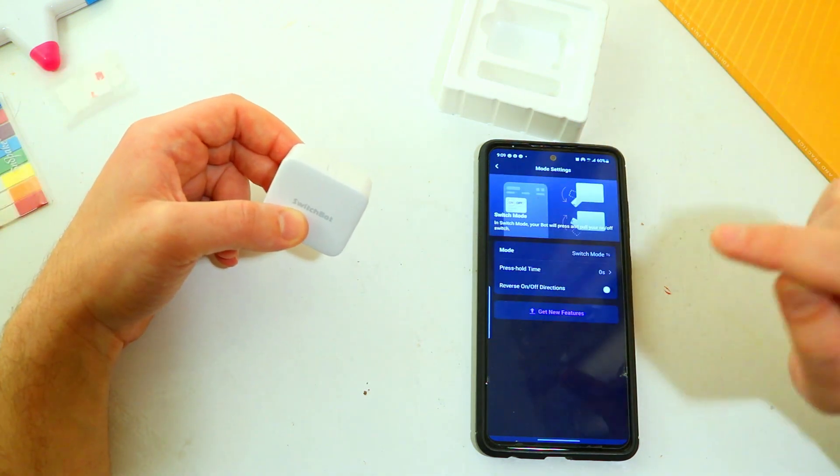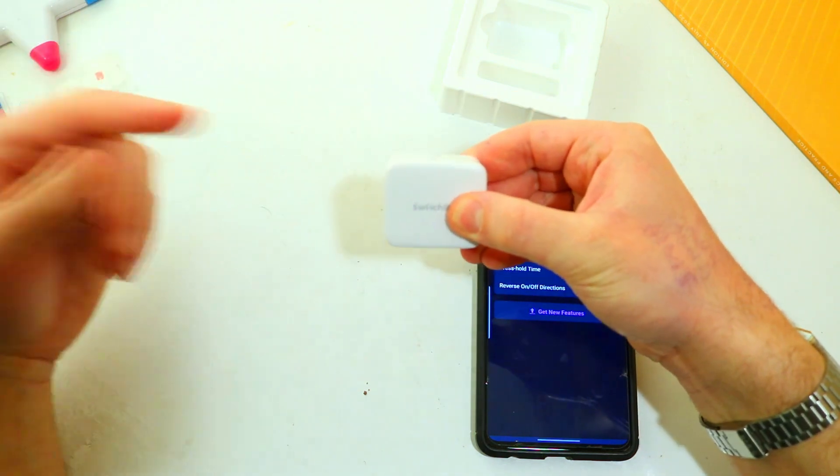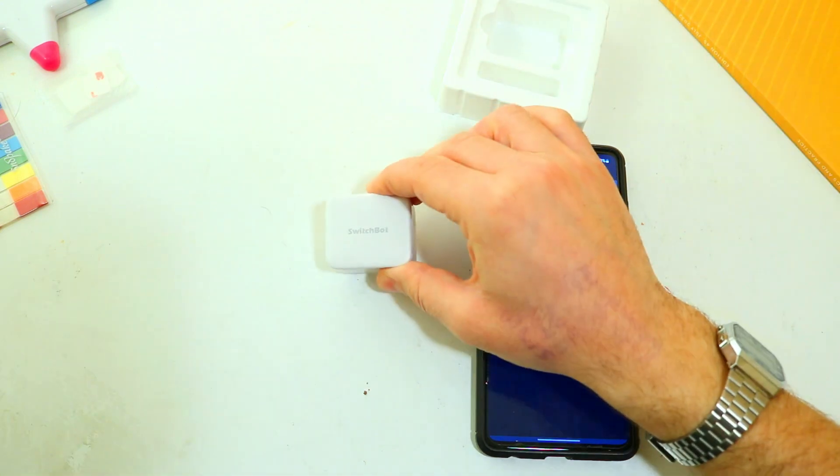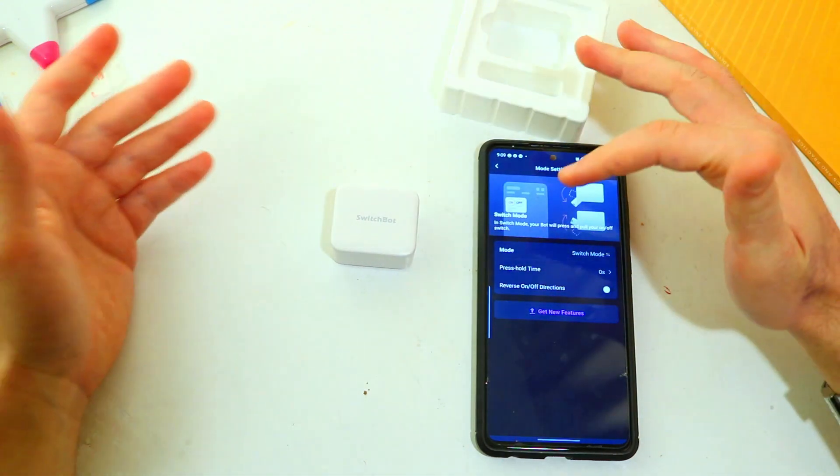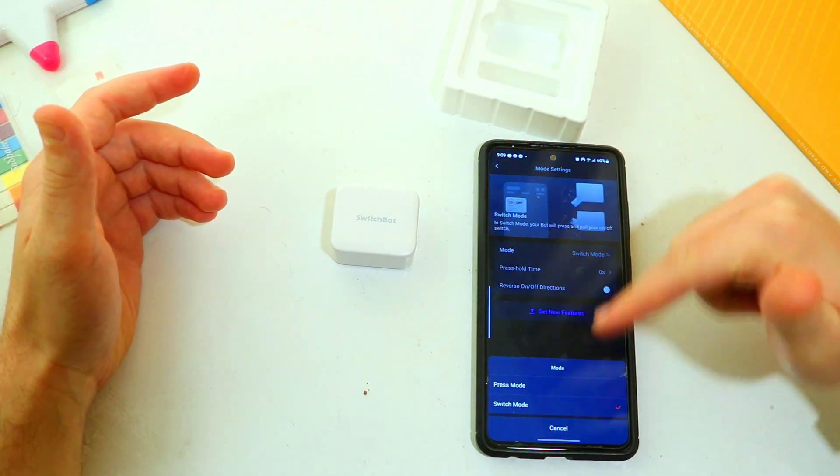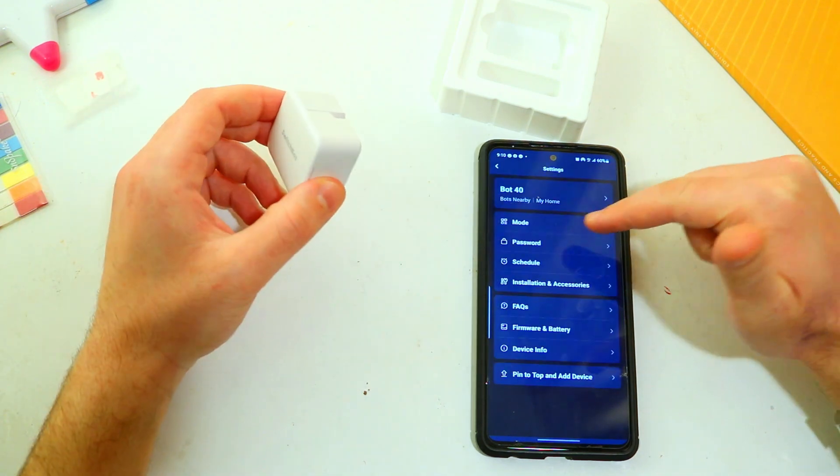Then we click on mode and mode it lets you switch between the different switch modes because as you can imagine there are some switches that require long press, some switches that require the button to be continually pressed in. The normal light switch that I have on the wall is like a rocker switch so I'm going to keep it in something called switch mode. So these are the two modes that it has here, switch and press mode. I'll keep it in switch mode and I'll show you what it does.